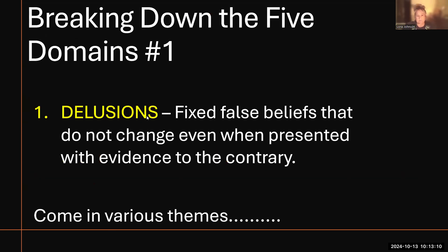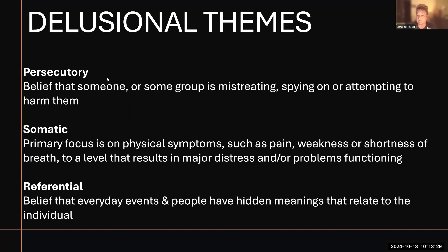So let's break down the five domains. Delusions first. It is a fixed false belief that does not change even when presented with evidence proving otherwise. Delusions come in various themes. There can be persecutory delusions — the belief that someone or some group is mistreating, spying on, or attempting to harm them or someone they love. An example might be that the government is trying to frame them, or that their neighbors are spying on them, or that somebody's following them in a grocery store.